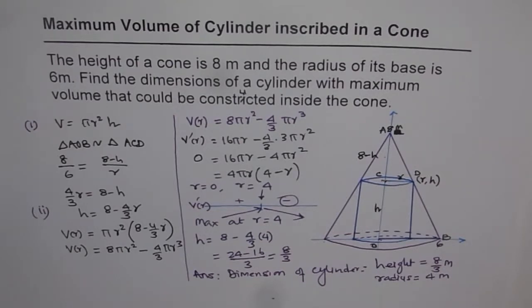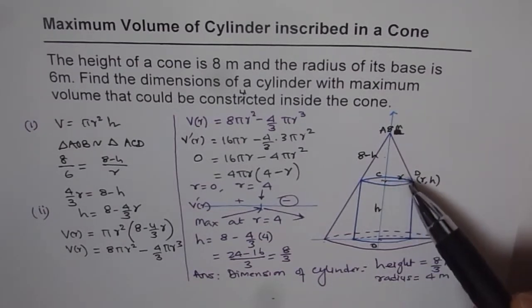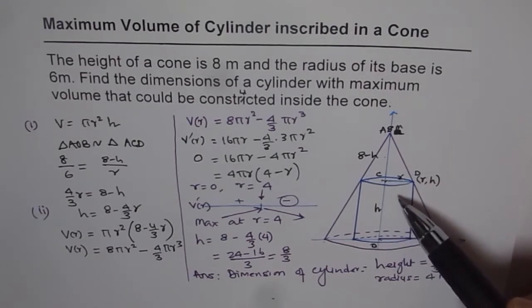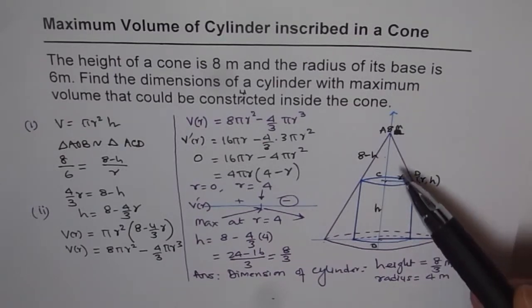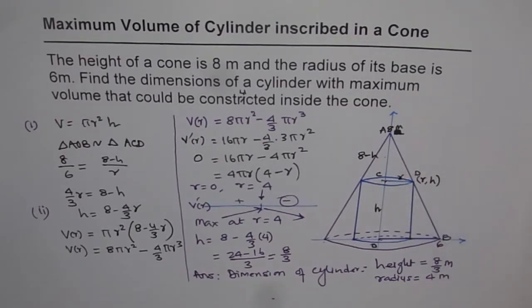So the important thing here is to relate height and radius with the help of an equation. And whenever you have cones involved, Pythagorean theorem and similar triangles help you out. Okay? Thank you.